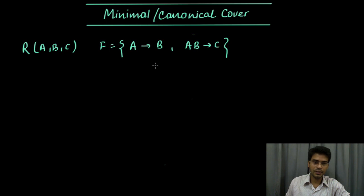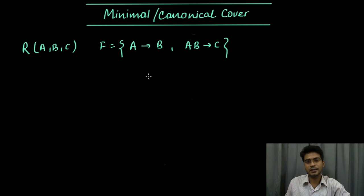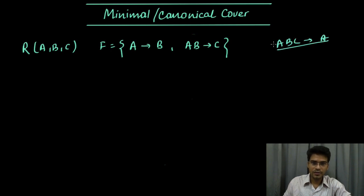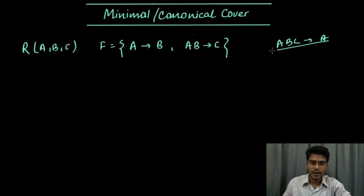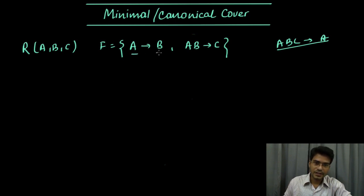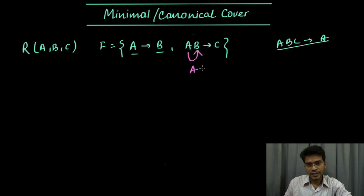Now if you look at this set of functional dependencies, you can find that something is redundant. Whenever we are designing a database management system, we can come up with many functional dependencies, but we always have to see which are important and which are redundant and can be removed. Here, since a can determine b, this b can be determined from a alone, meaning a alone can determine c.